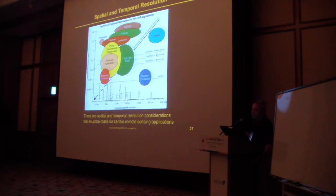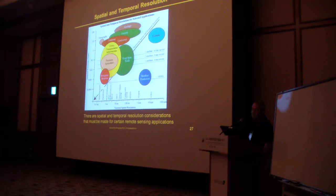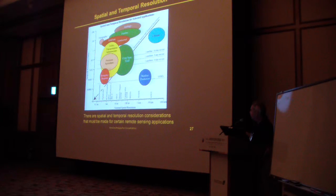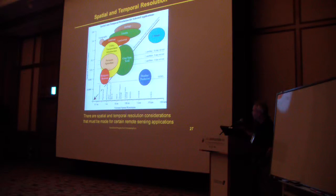The weather satellites — we all see these on our news broadcasts — have spatial resolutions on the order of 5 or 10 kilometers. The reason is they want to capture a whole hemisphere of the Earth; they're not interested in clouds that are 100 meters across. But the data can be acquired extremely frequently, about every 15 minutes. As you get to higher and higher spatial resolution, smaller and smaller pixel size, the frequency generally gets worse and worse.